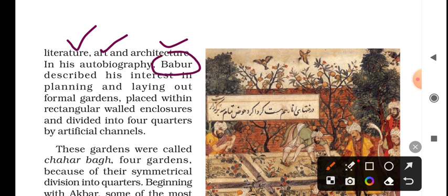From Babar's time, we can see he was very interested in gardens. When we covered the Mughal Empire earlier, we learned that Babar really loved gardening. He himself planned and laid out formal gardens.